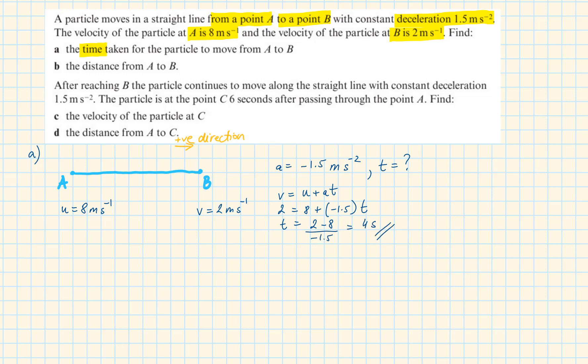For part B, we need to find the distance from A to B. We can now use the trapezium formula. Replacing the values, we will have 8 plus 2 divided by 2 times 4 is equal to 20 meters.